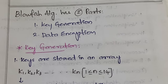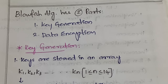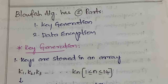In the Blowfish algorithm you have two steps: the first is key generation and the second is data encryption. In case of decryption, the same process works in reverse. Decryption is the reverse process for any algorithm, so I won't explain it separately.